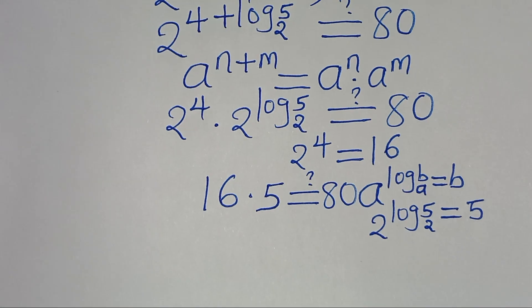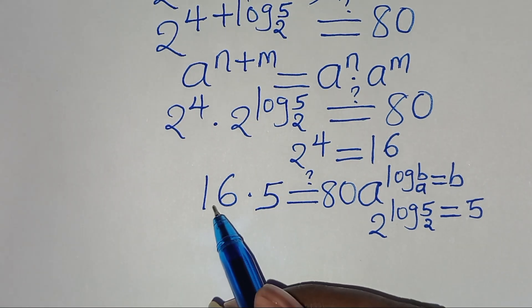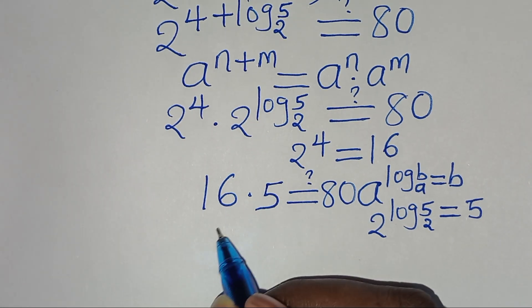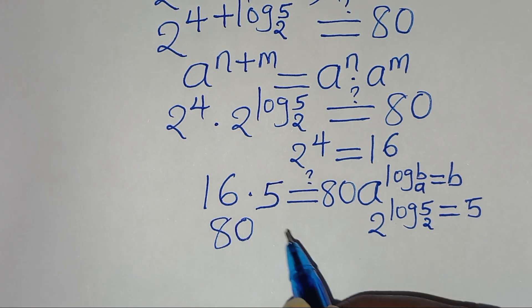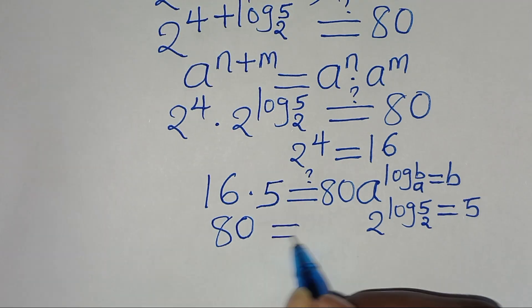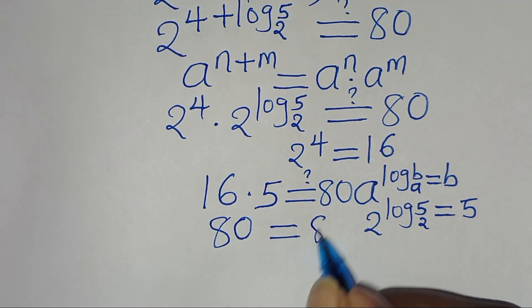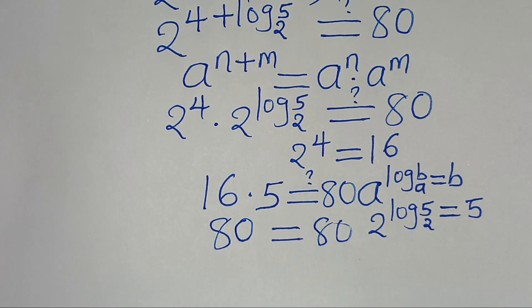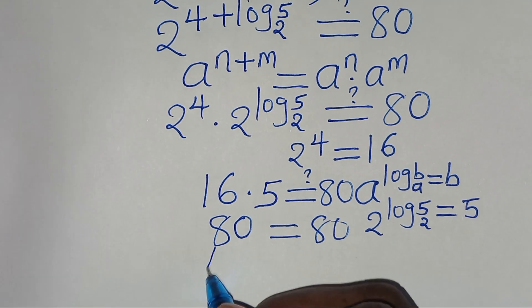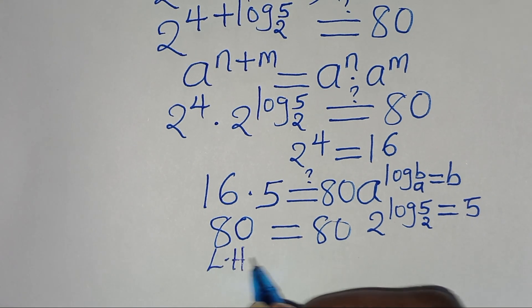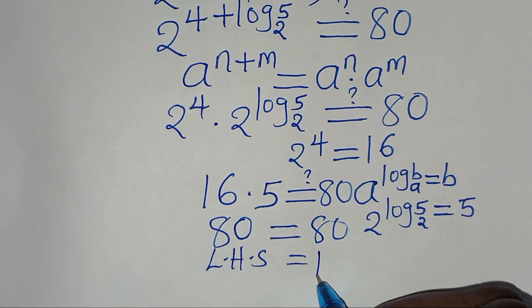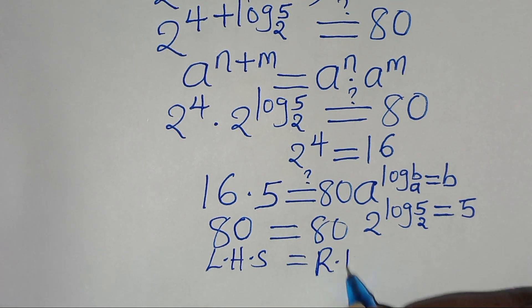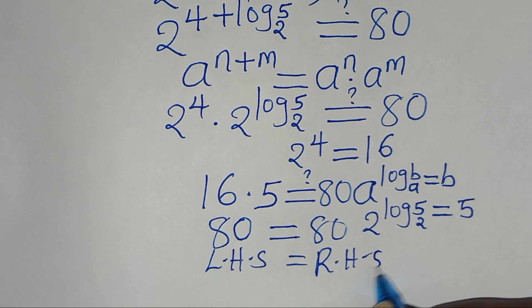Indeed, 16 times 5 equals 80, which equals 80. The left-hand side equals the right-hand side, confirming our answer.